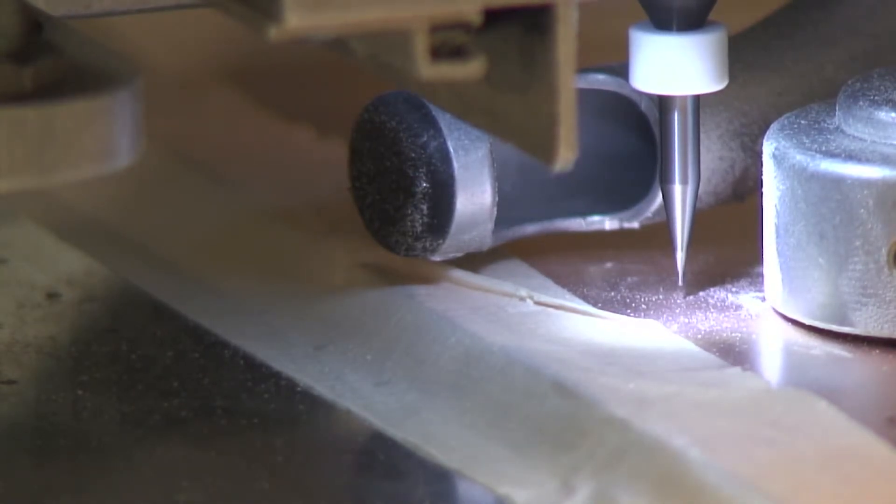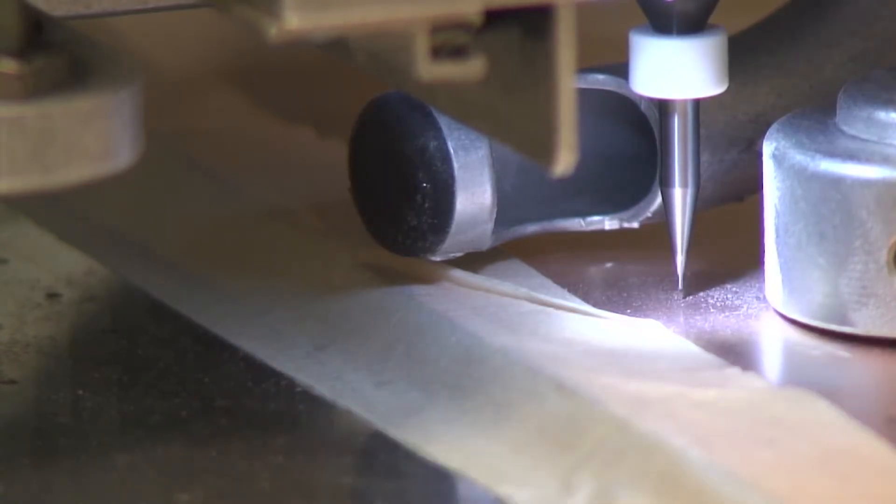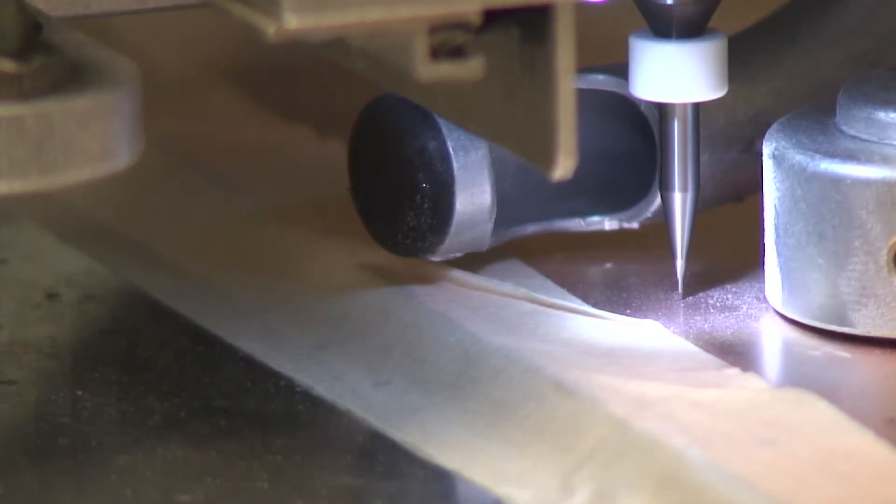We're going to slowly lower the mill closer to the copper clad until it actually engages the copper clad. To do that, you're going to use the depth of cut adjustment on the right hand side of the head of the mill. What you're looking for is you're going to be raising the foot, which in this shot looks like lowering the mill closer to the copper clad.